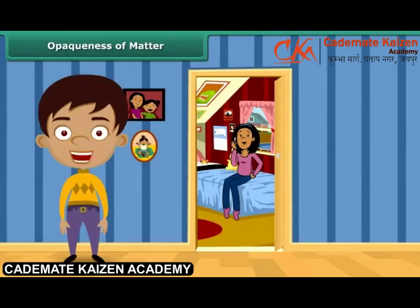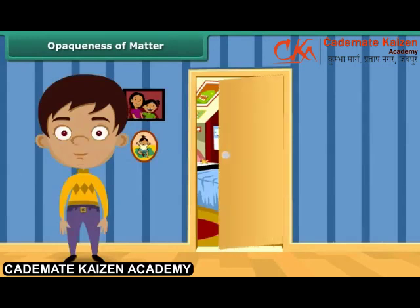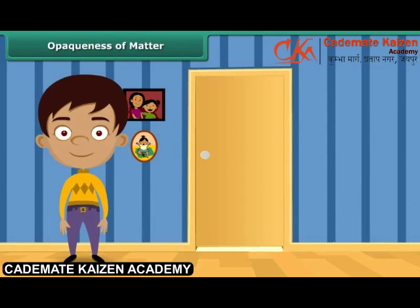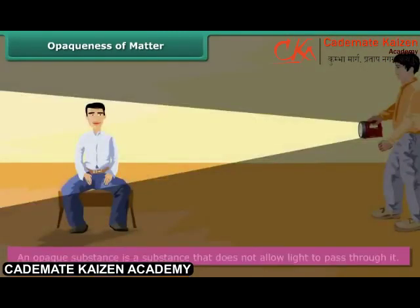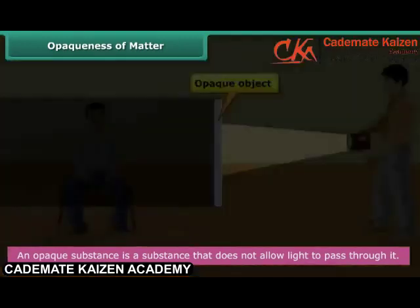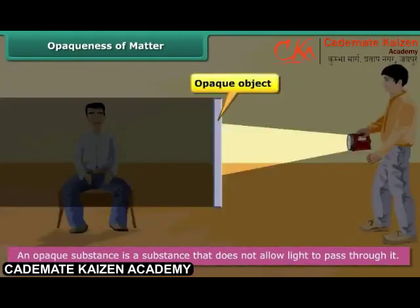Can you see what is happening in a closed room? No — because the walls and doors of the room are opaque. An opaque substance is a substance that does not allow light to pass through it; in other words, it is impenetrable by light. It does not absorb light; instead, it reflects light back. Hence, we cannot see things through an opaque substance.